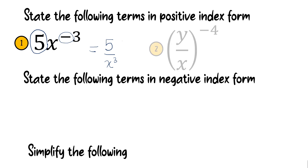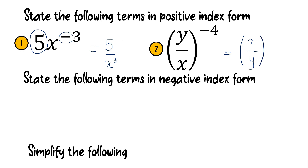The second one is in negative index form in fraction. As I explained before, if you have the question in fraction form, you just change the numerator and denominator — swap bottom to top, top to bottom — and change it to positive. That's all.